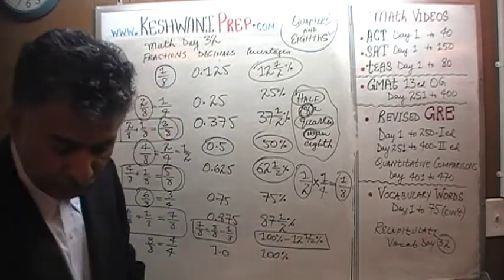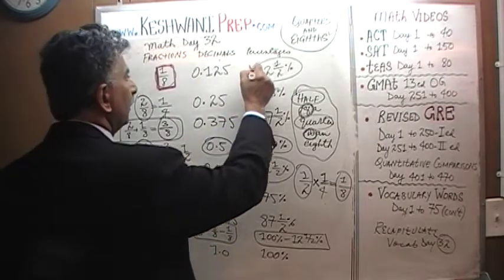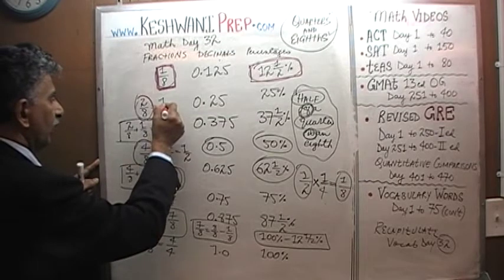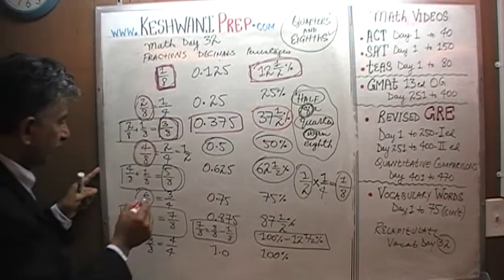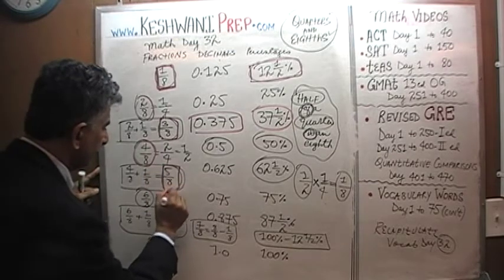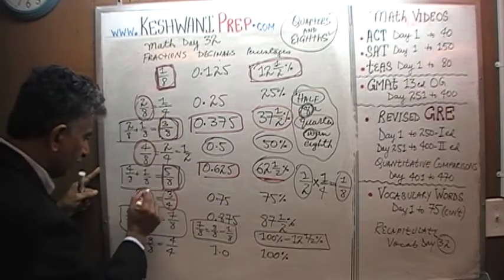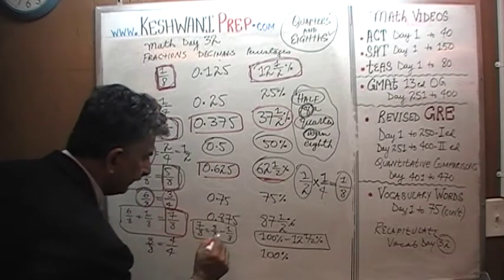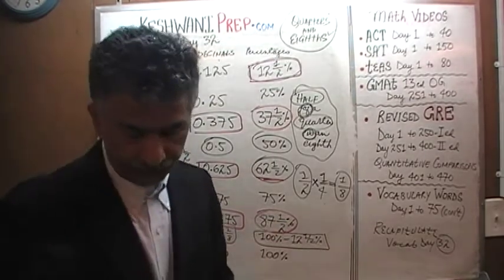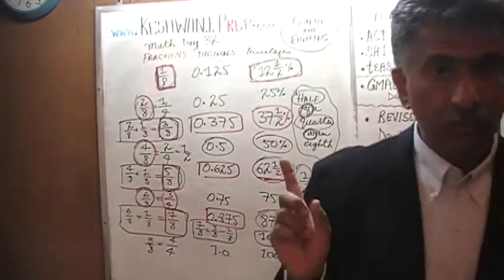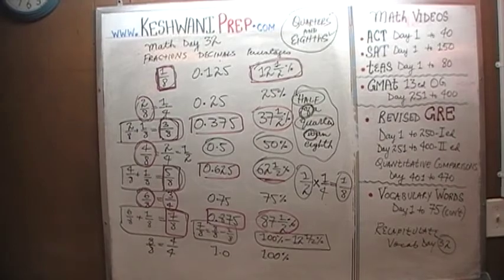All the eighths depend on knowing one eighth, which is 12.5%. Two eighths equals one quarter. Three eighths is 0.375 or 37.5%. Four eighths is 50%. Five eighths is 0.625 or 62.5%. Six eighths is three quarters. Seven eighths is 87.5%. And eight eighths is just 100%. You must know these eighths and quarters by heart.